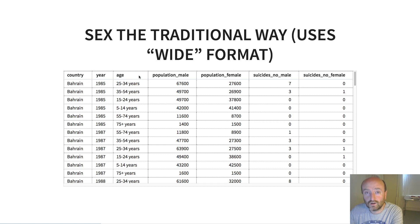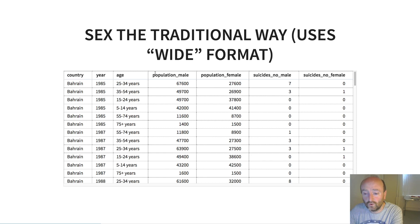I've got the same data as before, except now I have created a column for the population of males in the country in a particular age group and the population of females for that age group. I've also got counts of suicides in males and females, by age and by year. Previously I had a single column for population, a single column for suicide counts, and another column for sex. The wide format is slightly different to that.